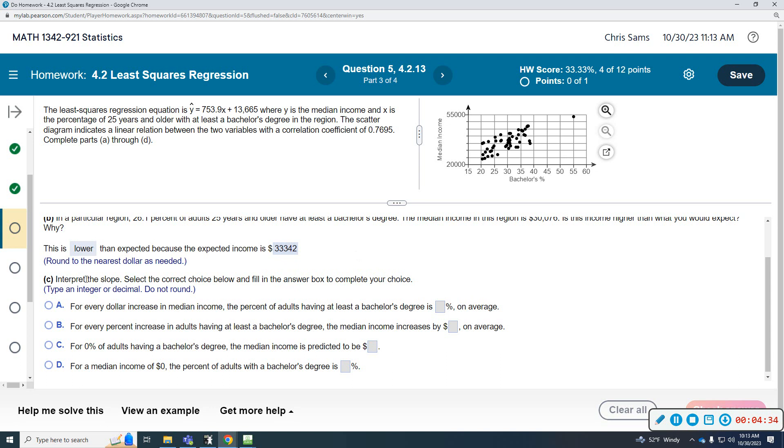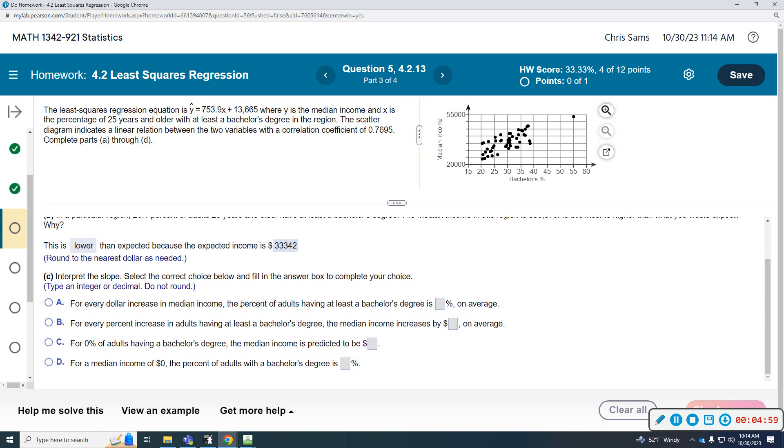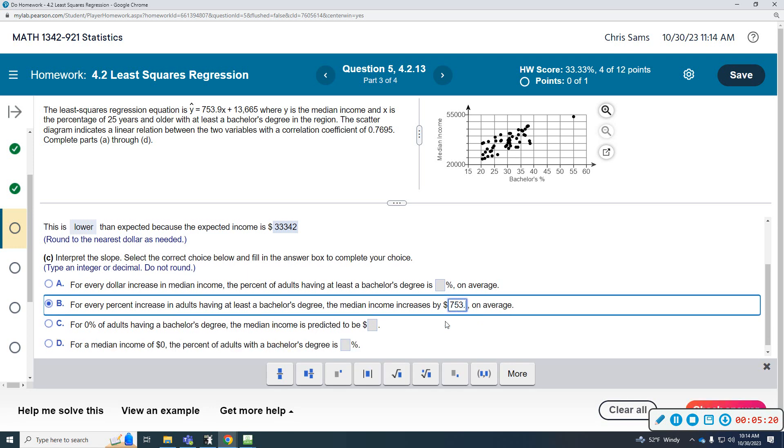So it says interpret the slope. So what is the slope? For every percent that x increases by one, the income goes up, the average income goes up by this slope amount. So for every percent increase in adults having at least a bachelor's degree, the median income increases by the slope amount on average. So b is the one we're looking for, 753.9. So the median income increases by that much.